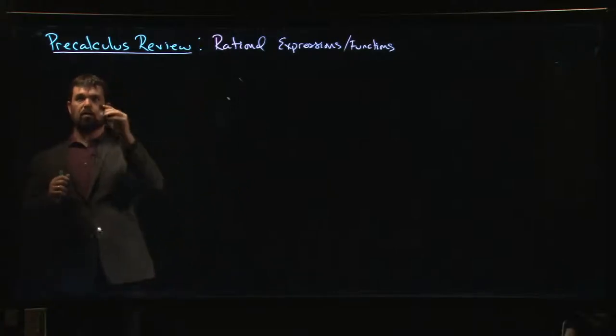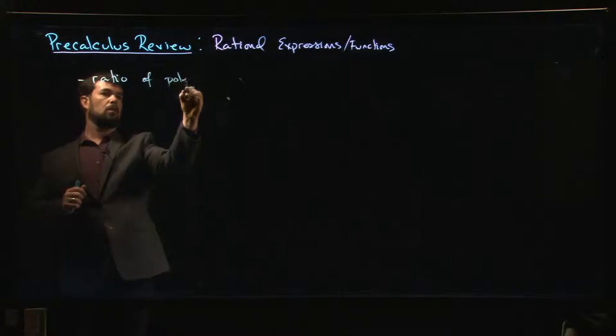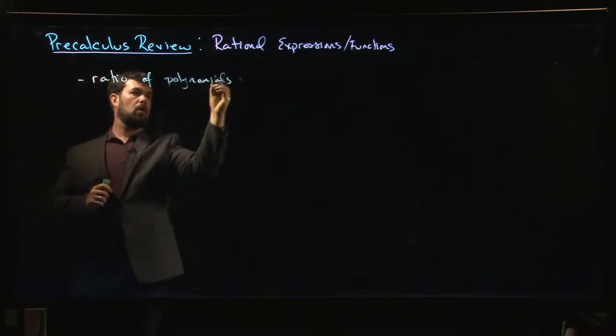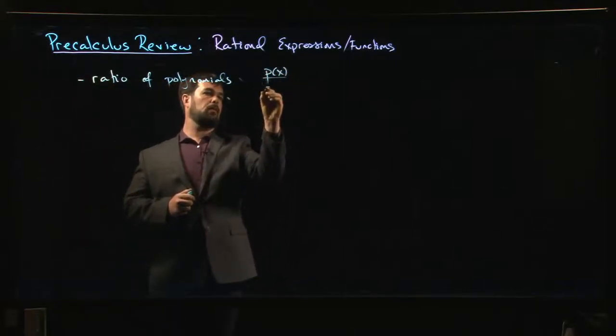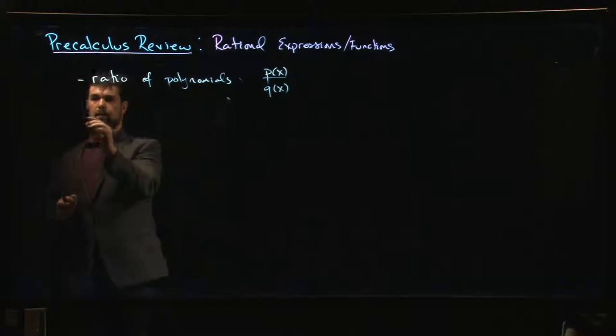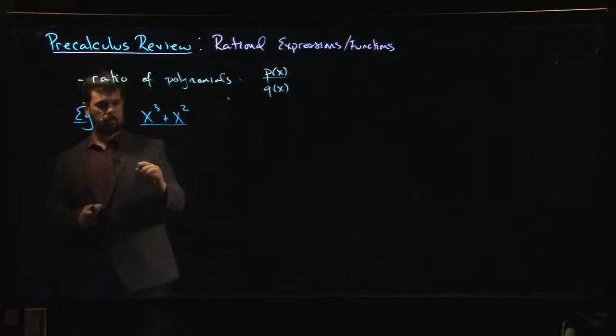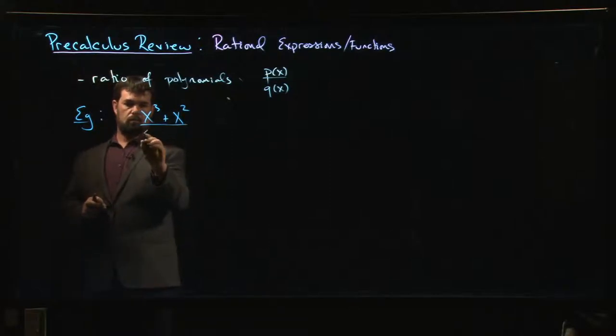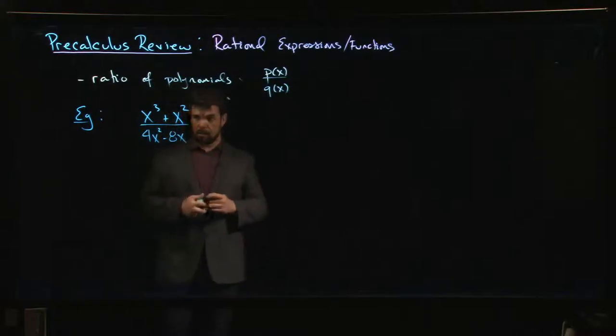We're looking at a ratio of polynomials, something that looks like P(X) over Q(X). For example, you might have something like X cubed plus X squared over 4X squared minus 8X. That's a rational expression.